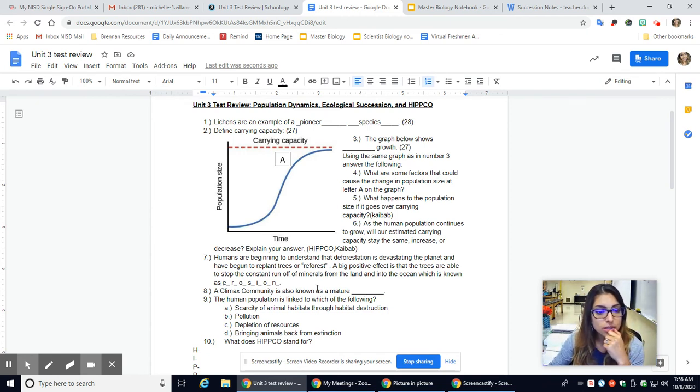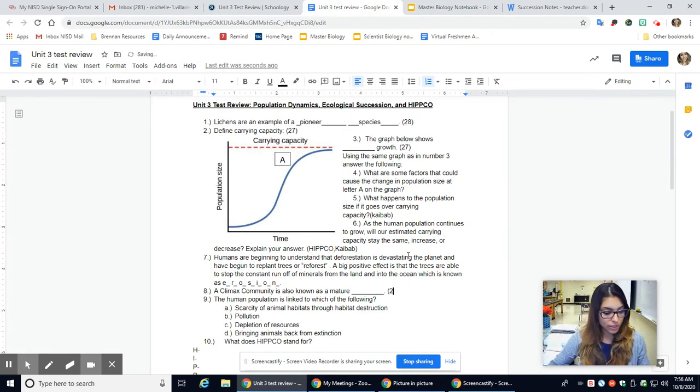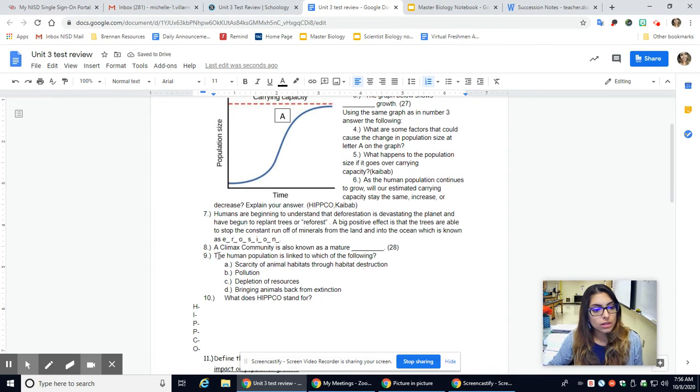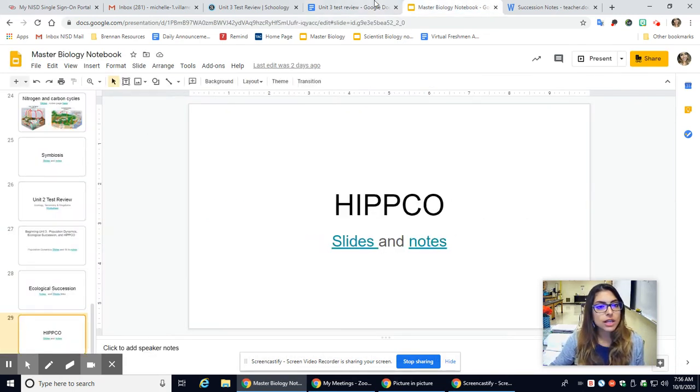A climax community is also known as a mature what? And if you're not sure, climax community, this information can be found in ecological succession, slide 28. Number nine, the human population is linked to which of the following? So which of these is directly caused by humans? This is a HIPCO question. I can find this on slide 29.